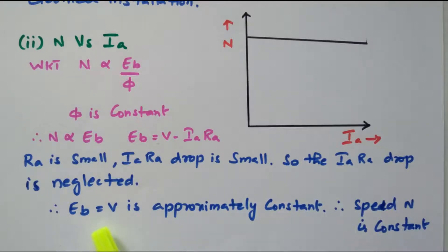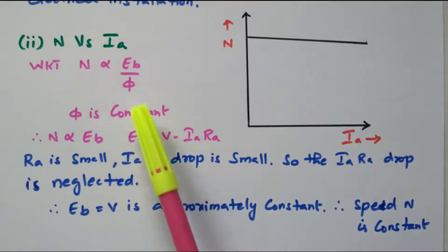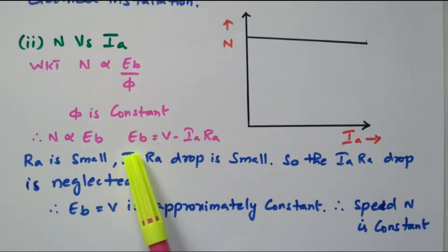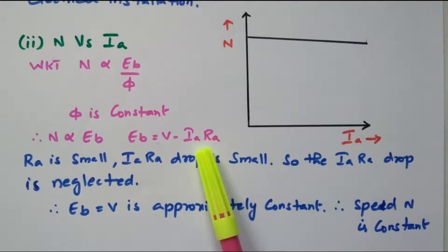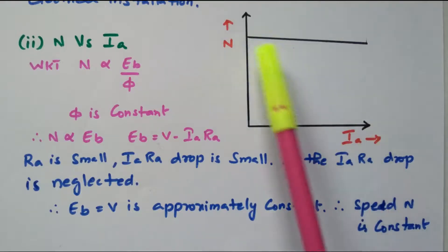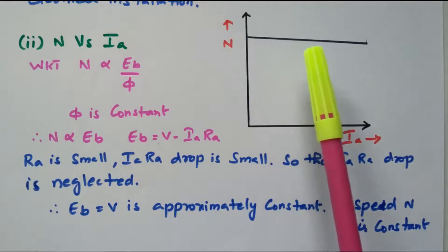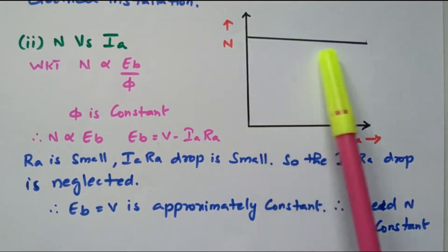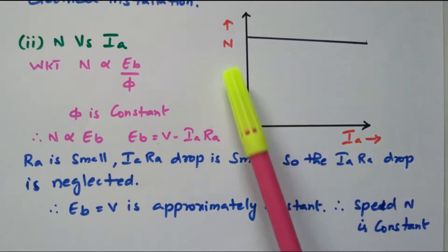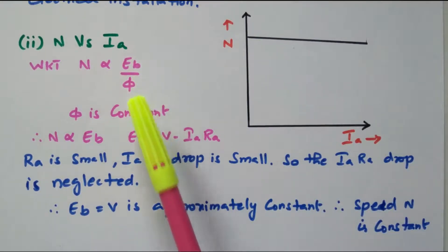So E_B is approximately equal to the applied voltage V. Since the applied voltage is almost constant, E_B is also constant, and therefore speed is also almost constant. Speed depends upon the back EMF and φ; φ is almost constant, and by analyzing the back EMF equation, the I_A × R_A drop is very small and neglected, so speed depends only on V, which is constant. When armature current increases, the speed is almost constant, slightly reducing due to losses and friction.